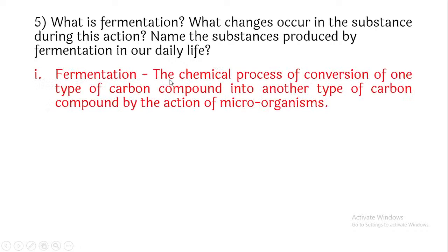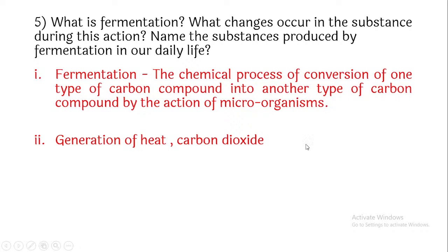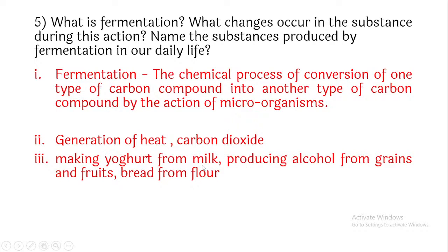What is fermentation? Fermentation is the chemical process of conversion of one type of carbon compound into another type of carbon compound by the action of microorganisms. Changes that occur during this process include generation of heat, carbon dioxide, and other gases. Substances produced by fermentation include: making yogurt from milk, producing alcohol from grains and fruits, and making bread from flour. These are examples of different carbon compounds being converted with the help of microorganisms. Not every microorganism is harmful — some microorganisms are useful too.